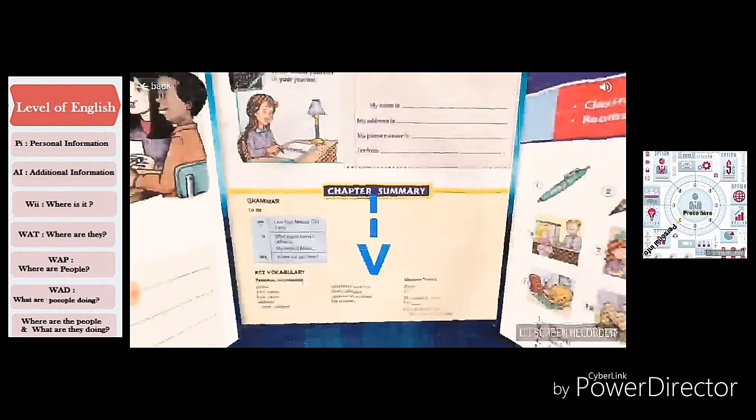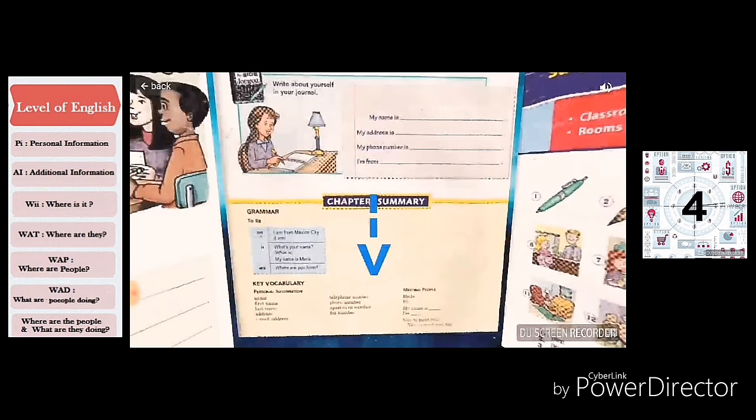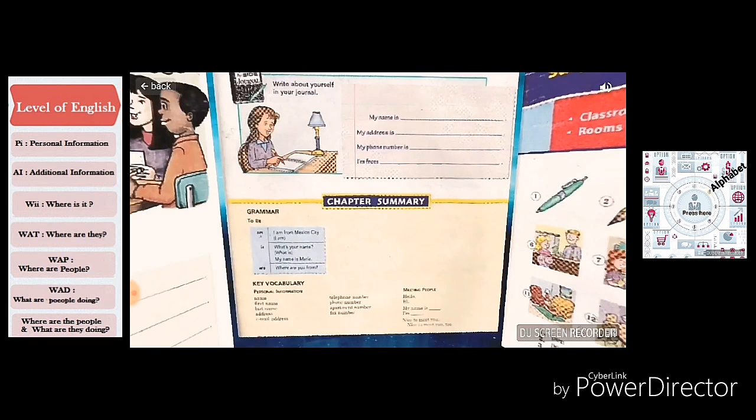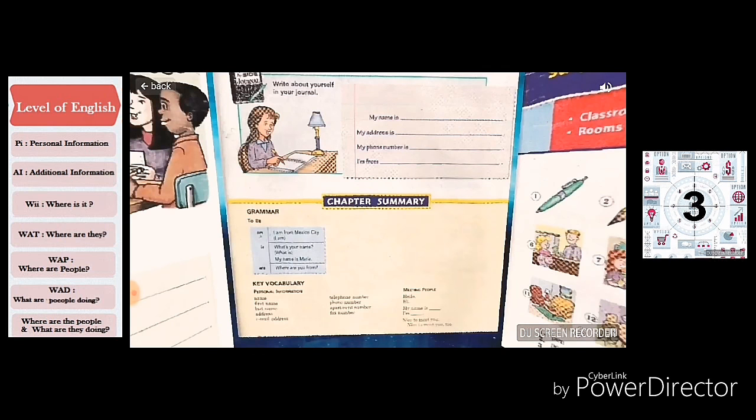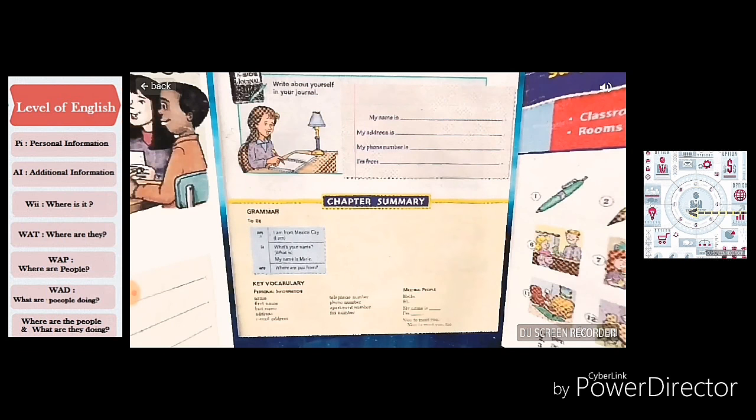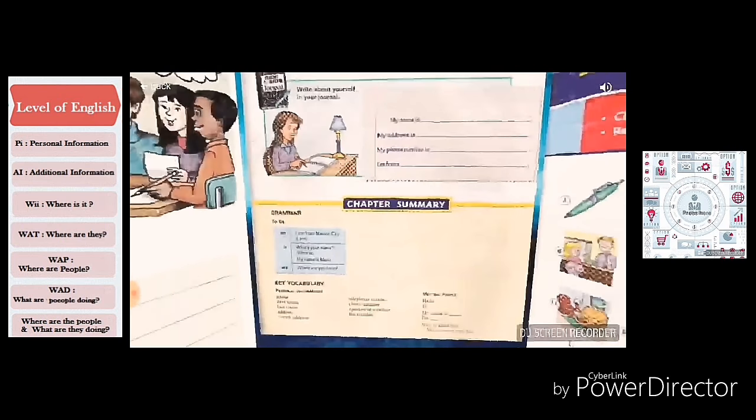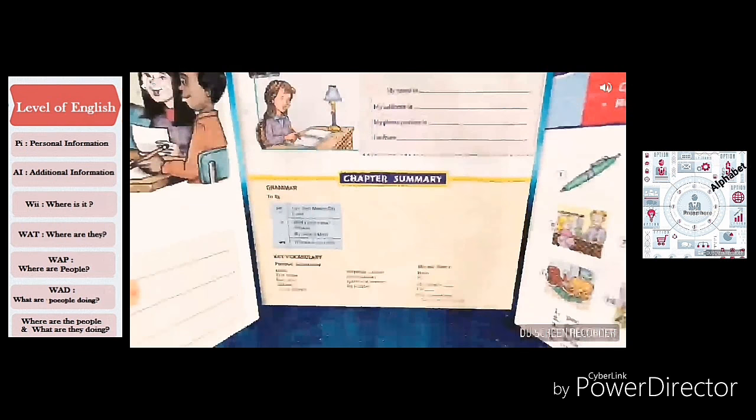And the chapter summary for this is we've taken a look at the questions from I'm from Mexico, the answer, what's your name, where are you from. So we usually have three same ones. What is your, and that works for name, address, and telephone number. What is your name? What is your address? What is your telephone number? And the answer is the same: my name, my address, my telephone number is. And the only one different is where are you from? I'm from Colima.